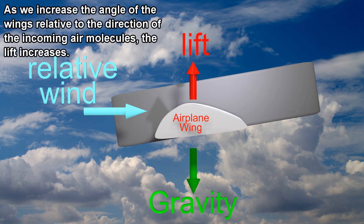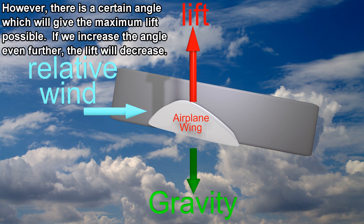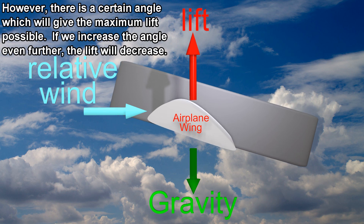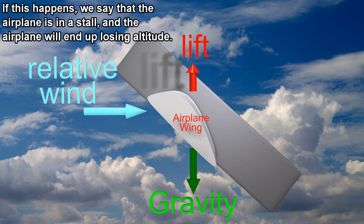As we increase the angle of the wings relative to the direction of the incoming air molecules, the lift increases. However, there is a certain angle which will give the maximum lift possible, and if we increase the angle even further, the lift will decrease. If this happens, the airplane is in a stall, and the airplane will end up losing altitude.